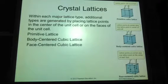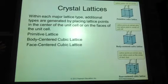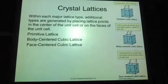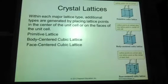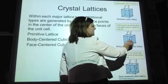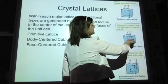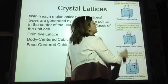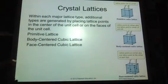We can also generate a centered lattice by placing an additional lattice point in a specific location in the unit cell. A body-centered cubic lattice simply means we place one lattice point at the center of the unit cell in addition to the ones at the corners. So the only difference between primitive and body-centered is that body-centered has a lattice point in the middle of the unit cell as well.